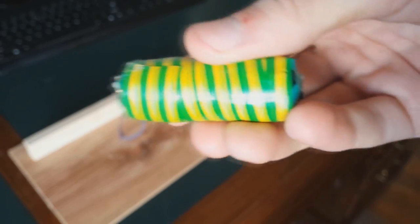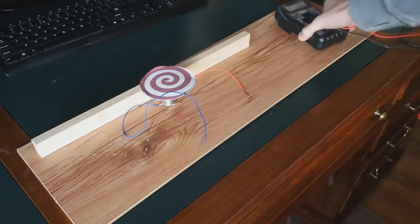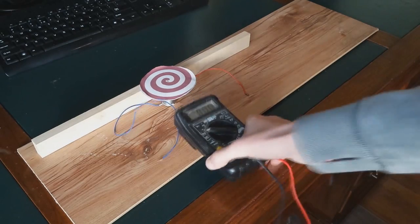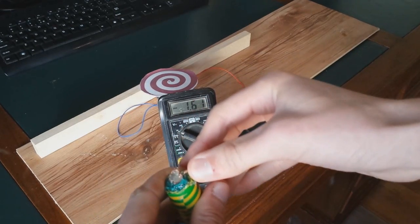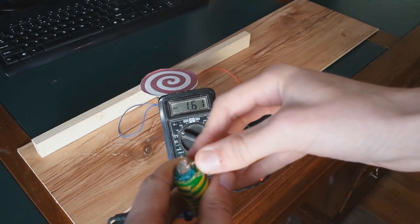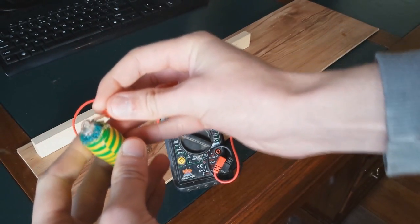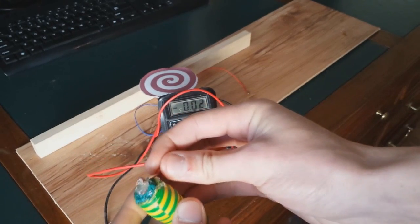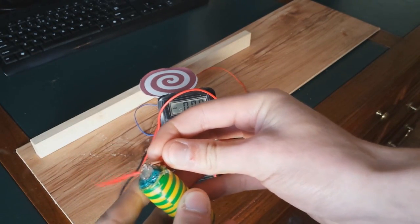And I will now test how much voltage it's giving me with this device. There you go, 1.6 volts. That's just a little bit more than a standard AA battery.